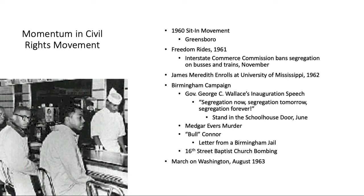In August of 1963, Martin Luther King Jr. and others organized the March on Washington, and about half a million people came to Washington, D.C., between the Washington Monument and the Lincoln Memorial, and demanded justice and civil liberties. Martin Luther King gave his famous 'I Have a Dream' speech.